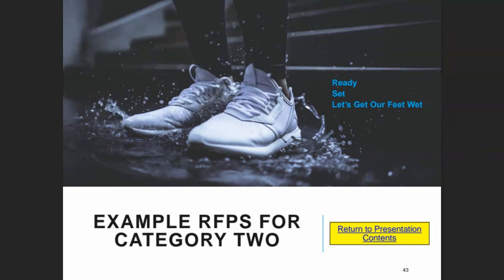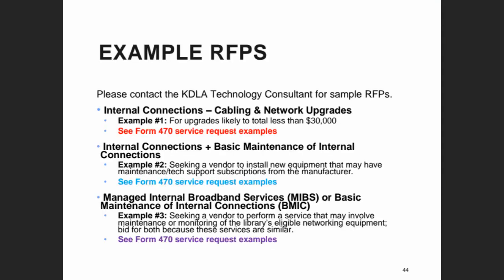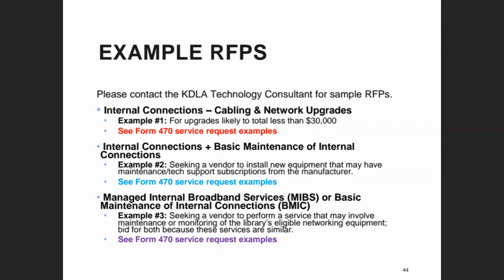We're going to look at a couple of examples before we actually start on the Form 470. Generally I link people to the website, but we're in the process of transitioning to a new website and haven't made many updates yet. If you need an example RFP for something, we have examples of all types of procurement from different Kentucky libraries and even from other states that you can use as a base, editing with your library's contact information and adjusting quantities and specifications.